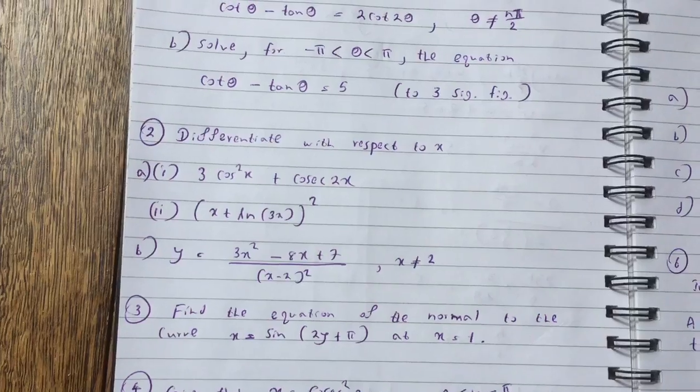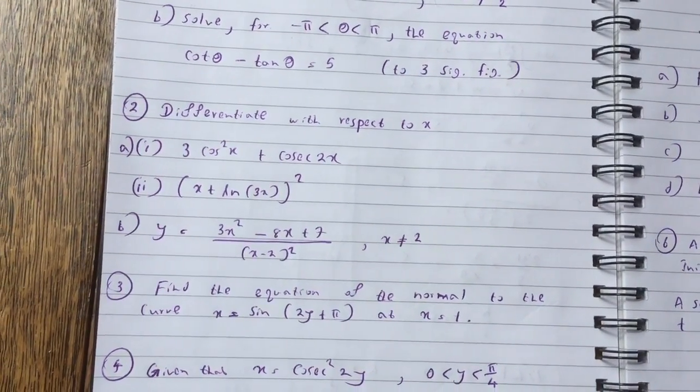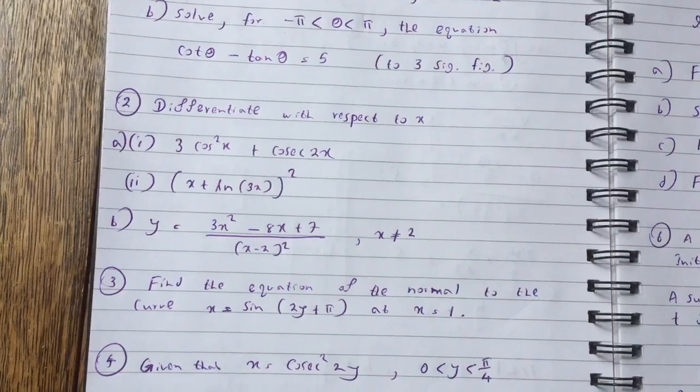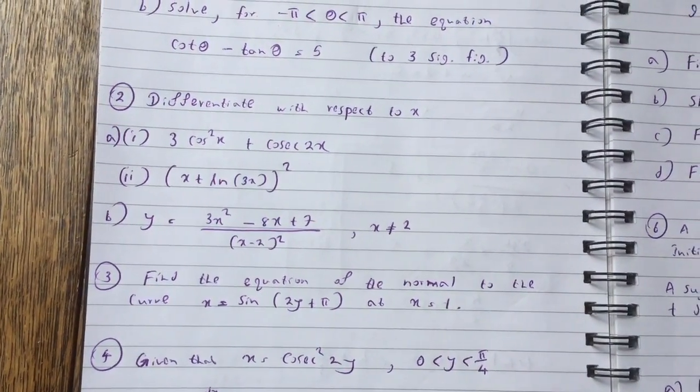Question 2, differentiate with respect to x. Part ai, 3 cos squared x plus cos 2x. Part 2i, x plus ln 3x squared.